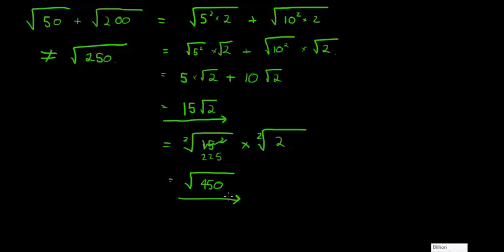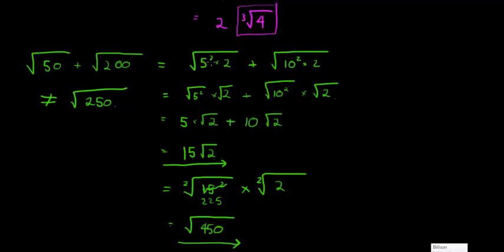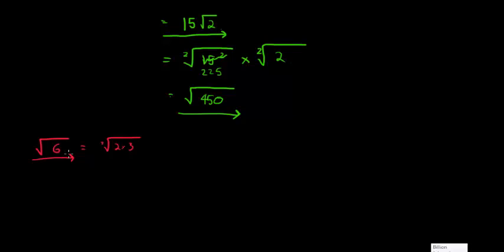To summarize: simplifying a CERD means breaking it down into factors where one or more factors have an exponent divisible by the degree of the radical, then applying our laws. If none of the factors qualify — for example, the square root of 6 equals √(2×3), and neither 2 nor 3 has an exponent divisible by 2 — then the CERD is already as simple as it can be. See you in the next video for more CERD laws.